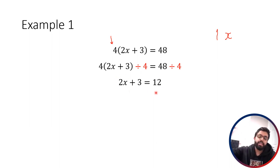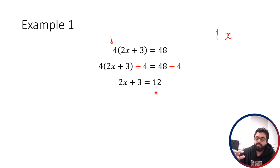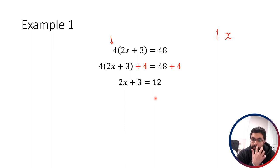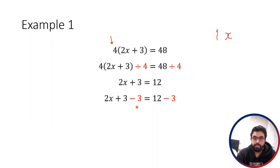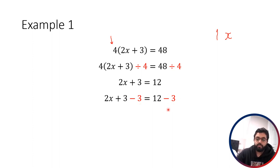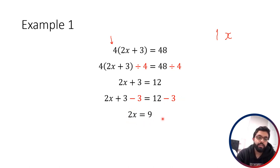We're going to do the same steps again. We look at BEDMAS and start at the bottom — A and S, addition and subtraction. Is there any addition or subtraction we can deal with first? Yes — there's this plus 3. Our x is being multiplied by 2, but then it's being added to 3. So we can undo that addition of plus 3 by subtracting 3. Whatever you do to the left-hand side, you also have to do to the right-hand side. So we subtract 3 from both sides, leaving just 2x on the left and 12 minus 3, which is 9, on the right.